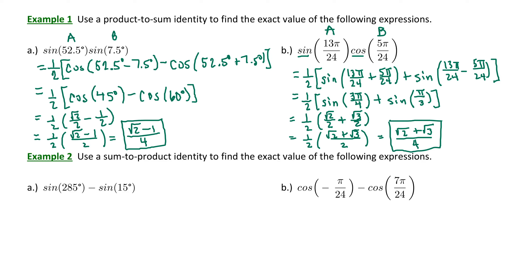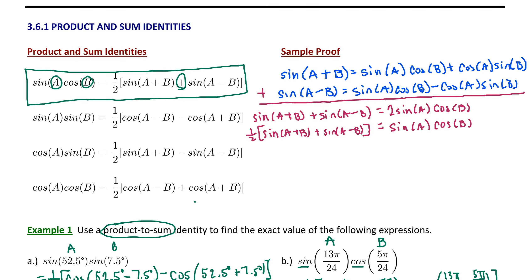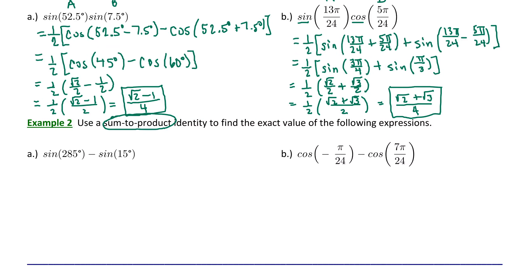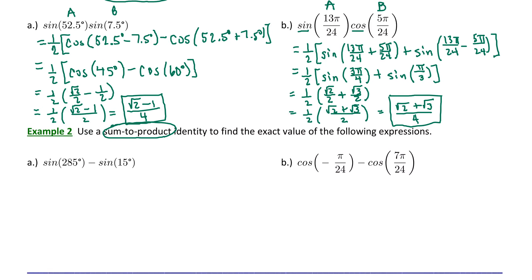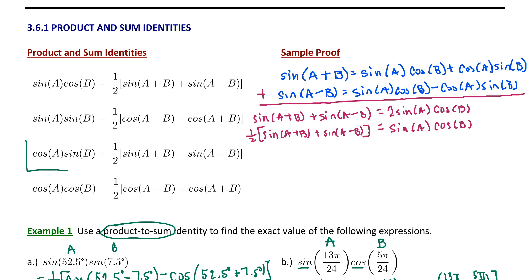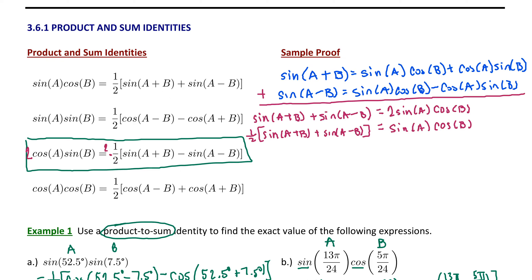Now let's try applying these identities in reverse. In example one we called them product-to-sum identities; in example two we're going to call them sum-to-product identities, meaning we start from the right side where the sums are and convert to the left side where the products are. For example 2a, we have sine of 285 minus sine of 15 degrees — the difference between two sines — which matches our third formula. However, since we have the difference between sines without the one-half factor, we need to multiply both sides of the equation by 2.